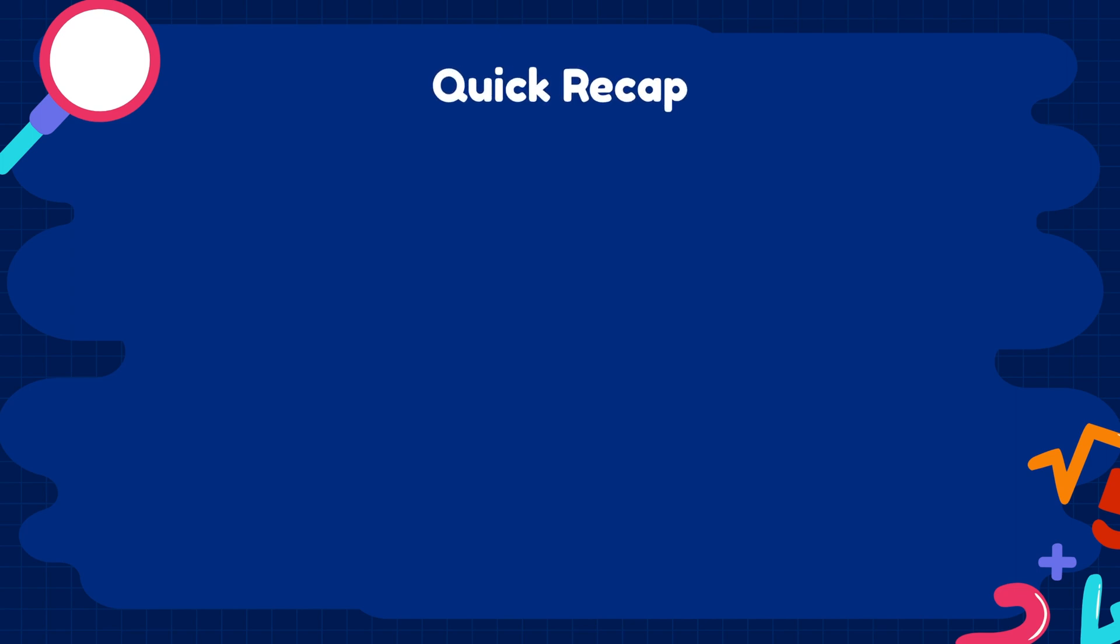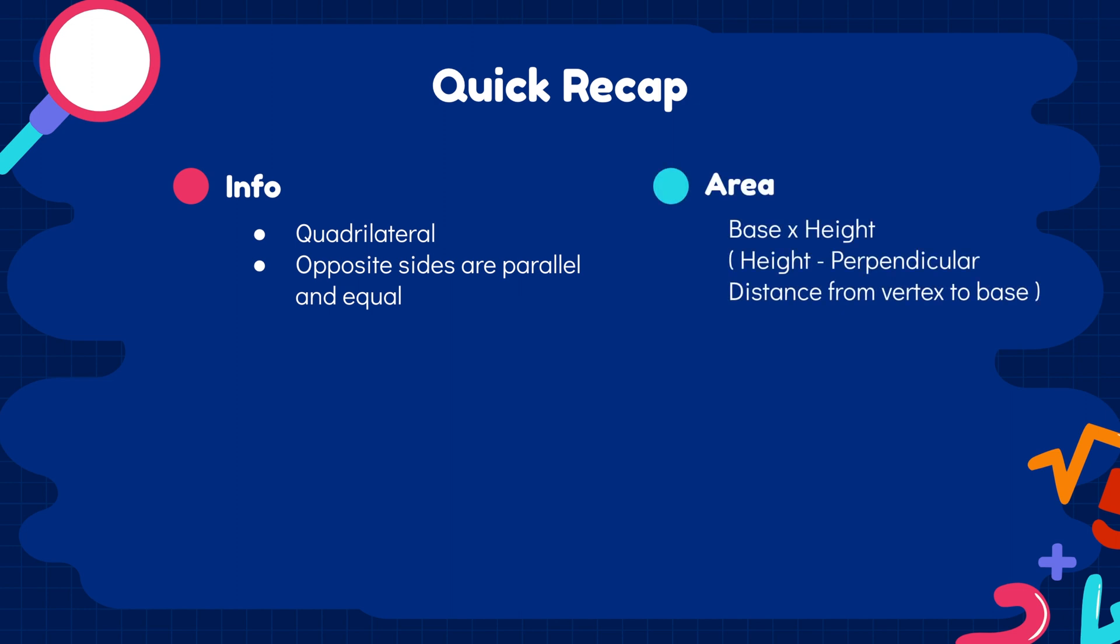A quick recap of what we learned today. A parallelogram is a quadrilateral with its opposite sides being equal and parallel. Its area is equal to base multiplied by height and its perimeter is twice the sum of its adjacent sides.